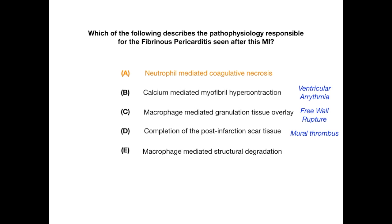Choice E, macrophage-mediated structural degradation, is very similar to choice C, but specifically involves the interventricular septum. When macrophages come in to clean up the infarcted area and chew up dead tissue and debris, they can weaken the interventricular septum and rupture it. These are the different pathophysiologies, and you need to correlate each one to its complication and timeline.